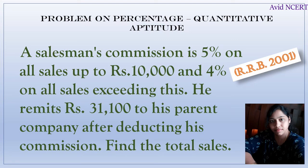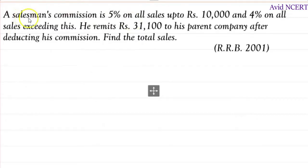Hello viewers, welcome to my channel, this is Geeta. A salesman's commission is 5% on all sales up to rupees 10,000 and 4% on all sales exceeding this. He remits rupees 31,100 to his parent company after deducting his commission. Find the total sales.